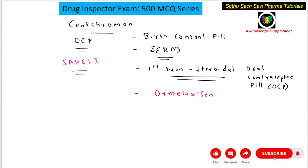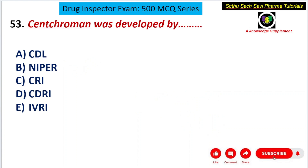Centchroman's brand name is Saheli, and it is also called Ormeloxifene. It is a selective estrogen receptor modulator developed by Dr. S.S. Ratnam and his team at CDRI — the Central Drug Research Institute, located in Lucknow, Uttar Pradesh. So the correct answer is D — CDRI.